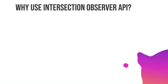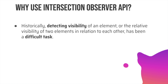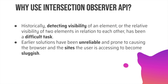Now why should we use the Intersection Observer API? Couldn't we just go with the standard JavaScript way of listening to a window event using window.addEventListener? Historically, detecting visibility of an element has been a difficult task. Earlier solutions have been unreliable and prone to causing the browser and the sites to become sluggish. Listening to every pixel change with window.addEventListener is not very performant, and if we have something available in the web API, why not utilize that?